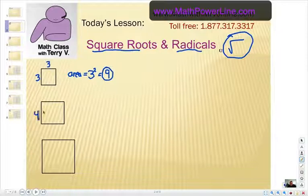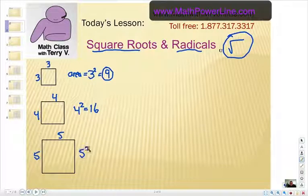What if it's four by four? Well, four squared would be 16, so the area inside that square would be 16. And what if it's five? Well, as you can see the pattern here, that would be five squared, five to the power of two. Five times five is 25.